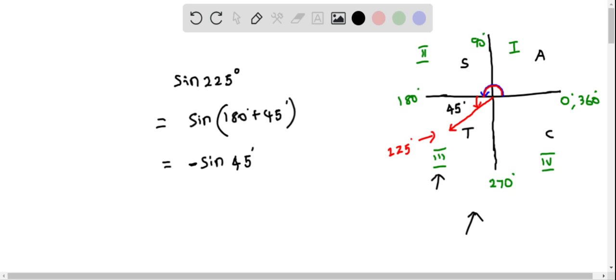Therefore, this is equal to negative sine 45 degrees. We know the value of sine of 45 degrees, which is square root of 2 divided by 2, or radical 2 by 2. So this is the exact value of sine of 225 degrees.